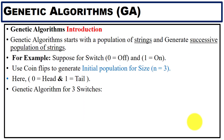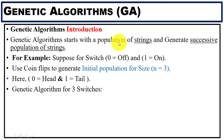Genetic algorithms start with a population of strings. Initially we have a population of strings, and from this population we can further generate successive populations of strings. Here we have an example to illustrate this.